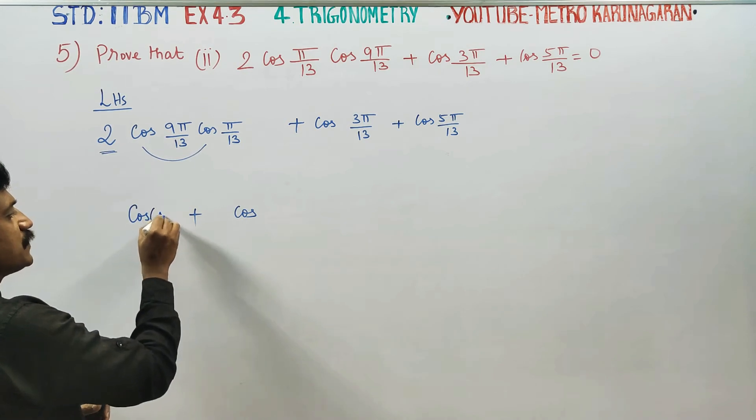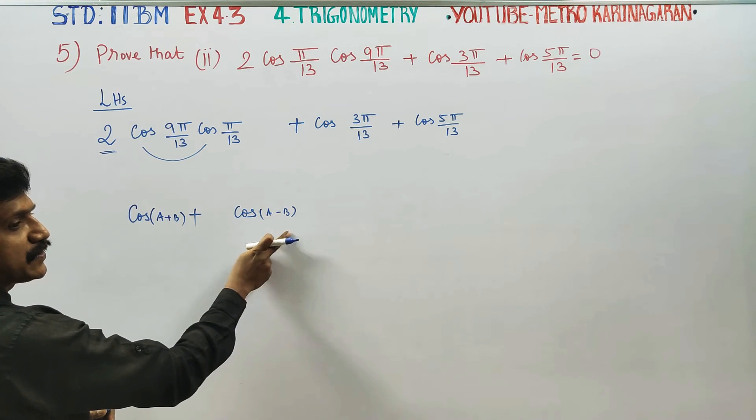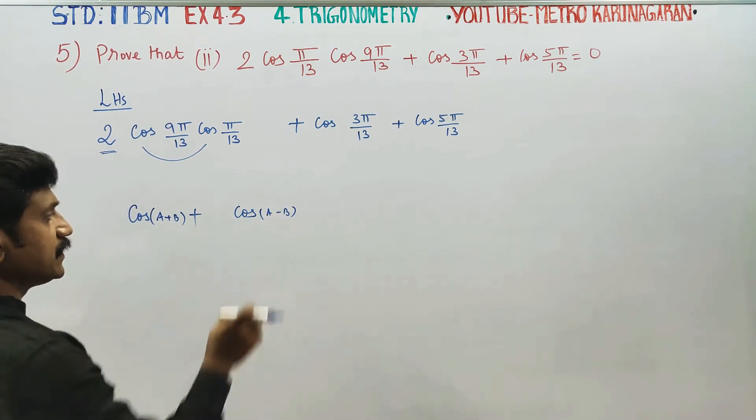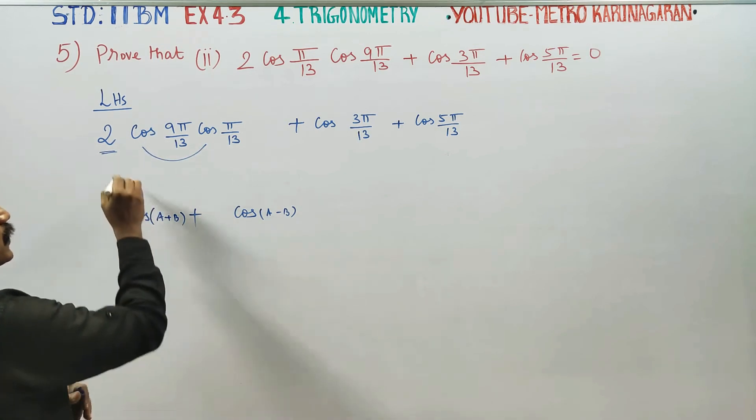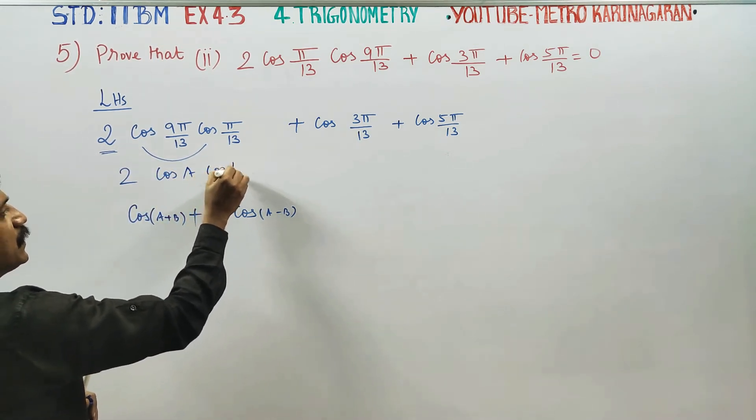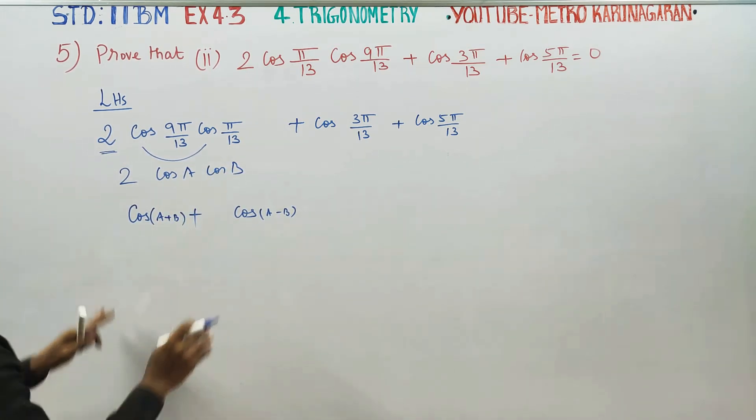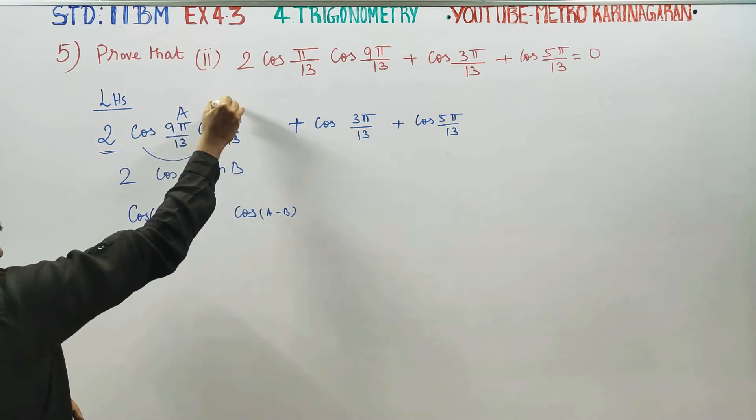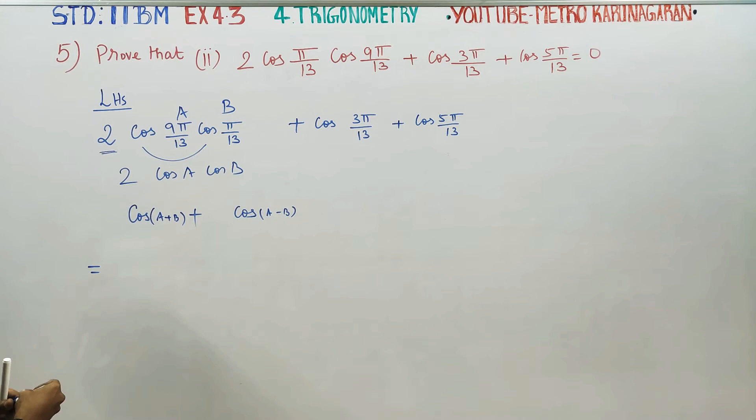A plus B formula, A minus B. A minus B, you can see A plus B. You can see that one important answer. A minus B. The formula is 2 cos A cos B.